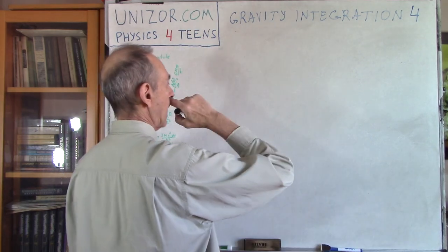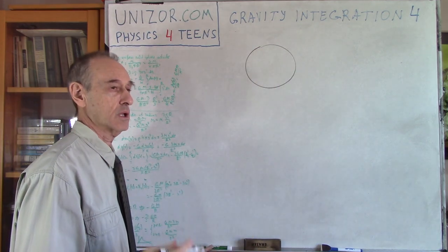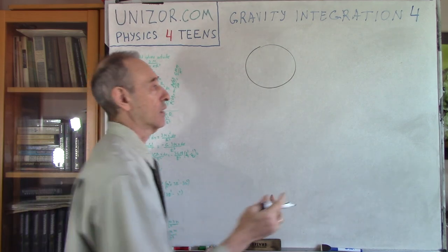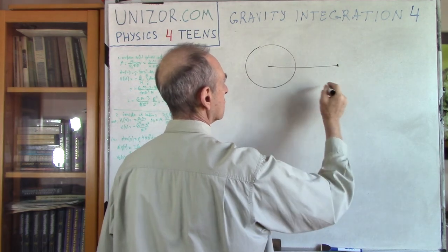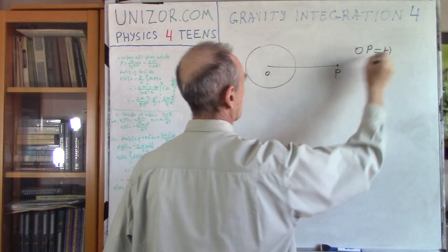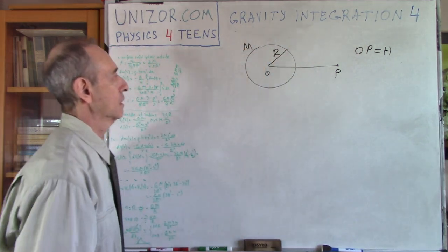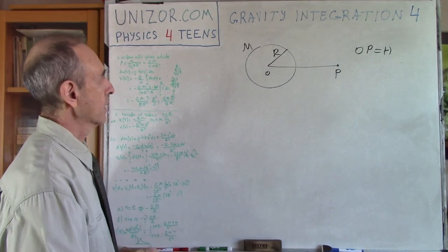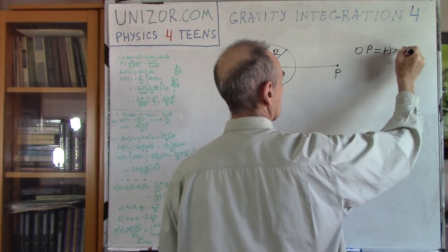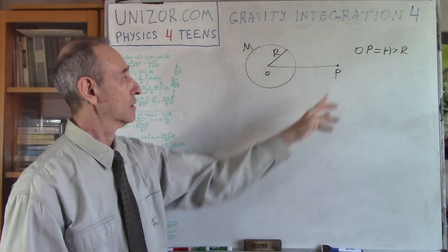Let's get back to our problem. Our problem is to calculate the gravitational potential of a solid sphere, and right now the first problem is to do it outside of the sphere. Let's say you have some kind of a point at distance H from the sphere of radius R and mass M. So I have a sphere, radius R, distance H, H is greater than R, and we have to determine the gravitational potential at this particular point.